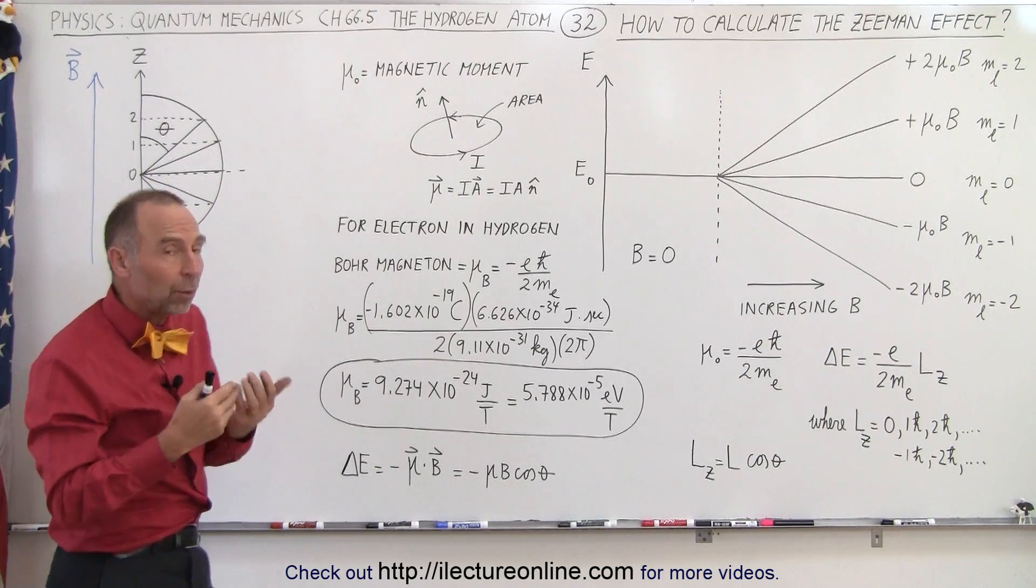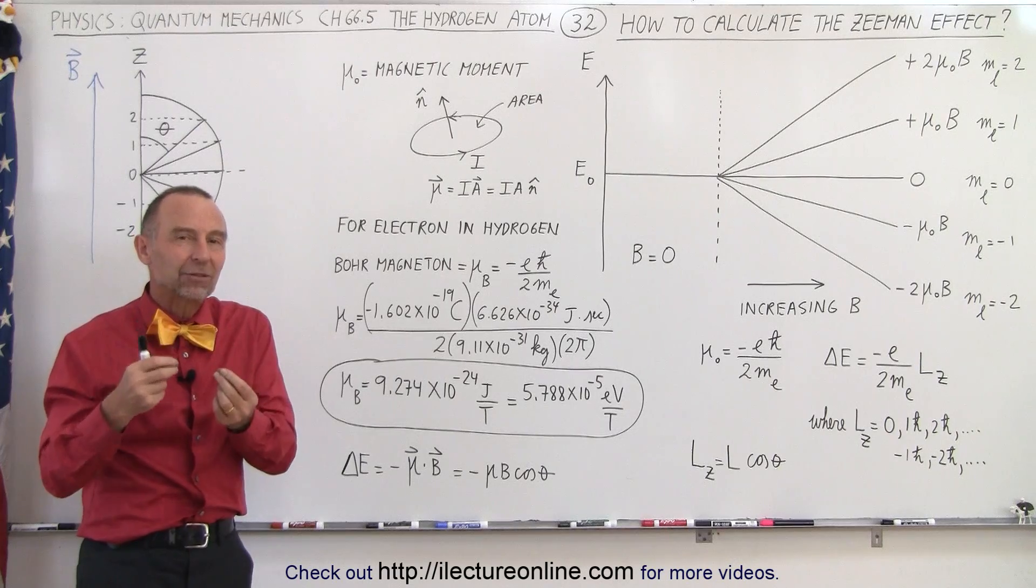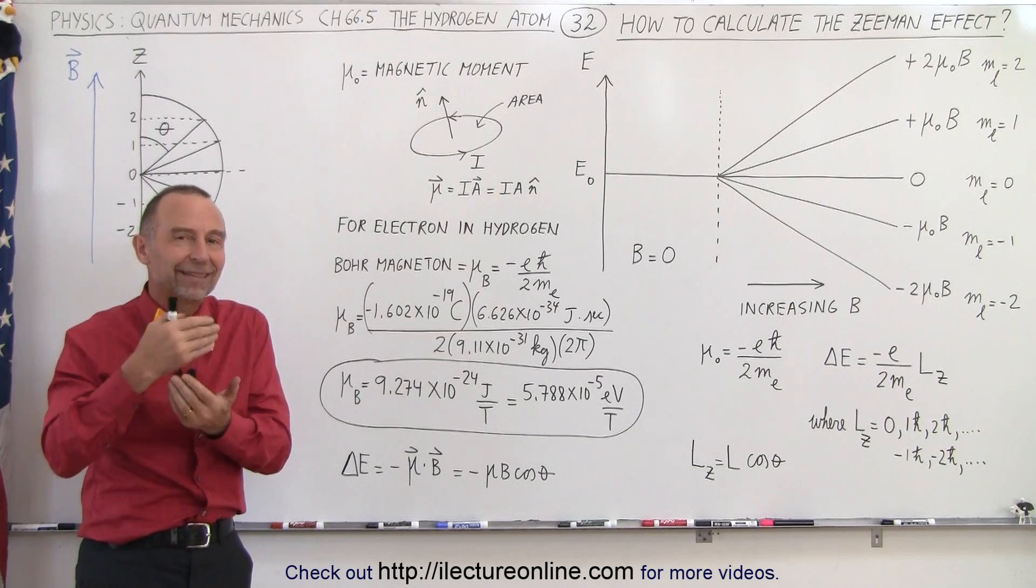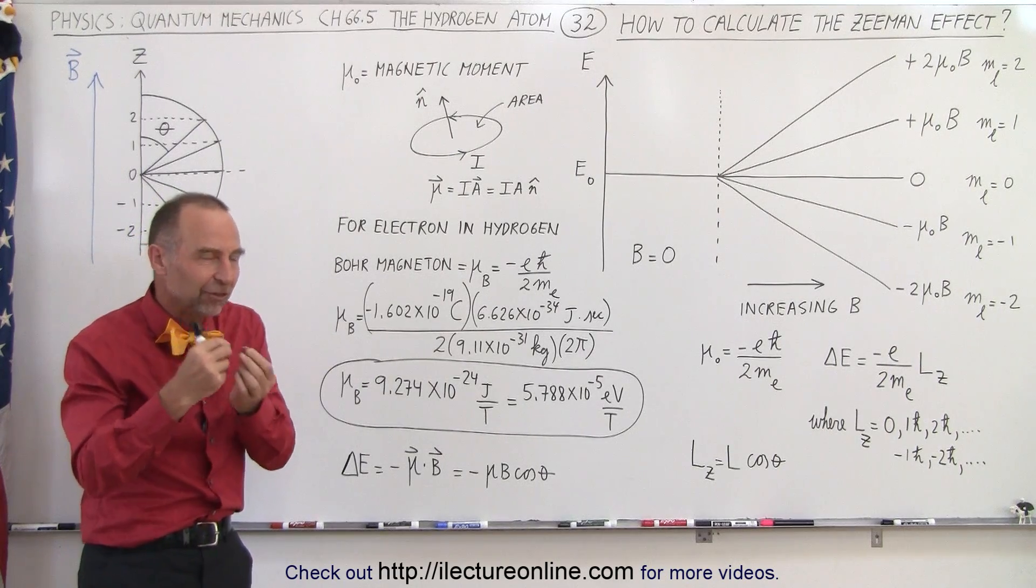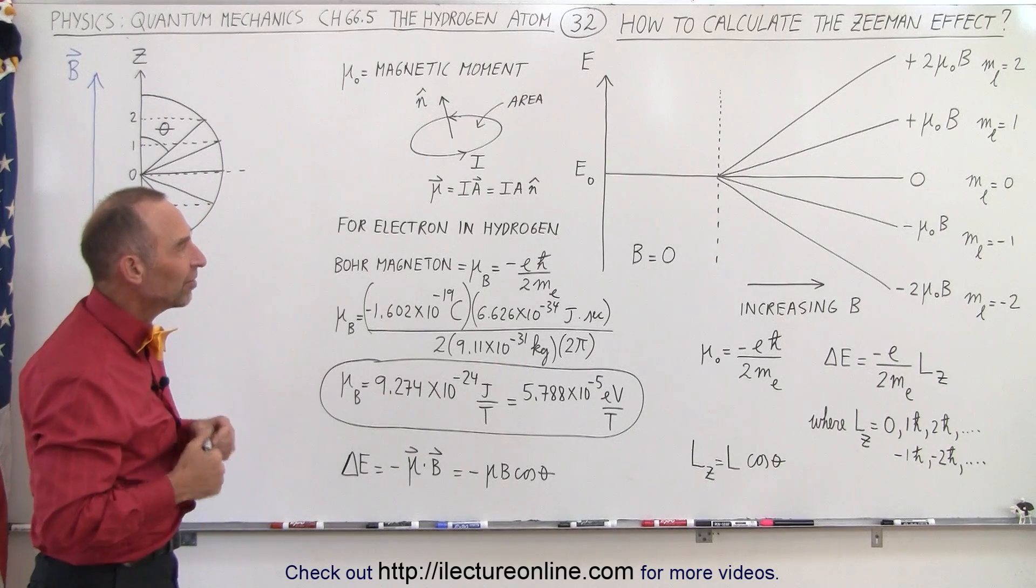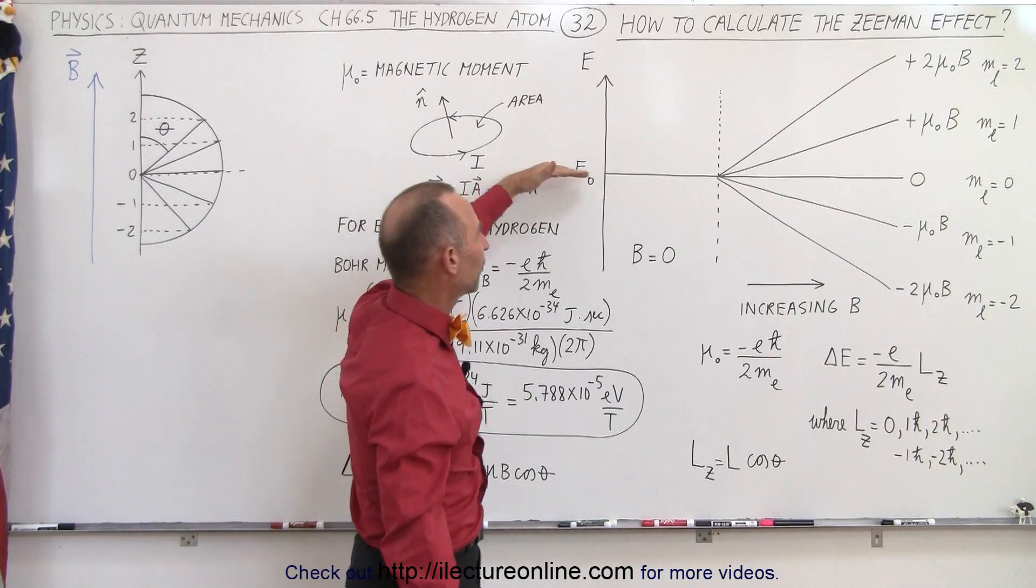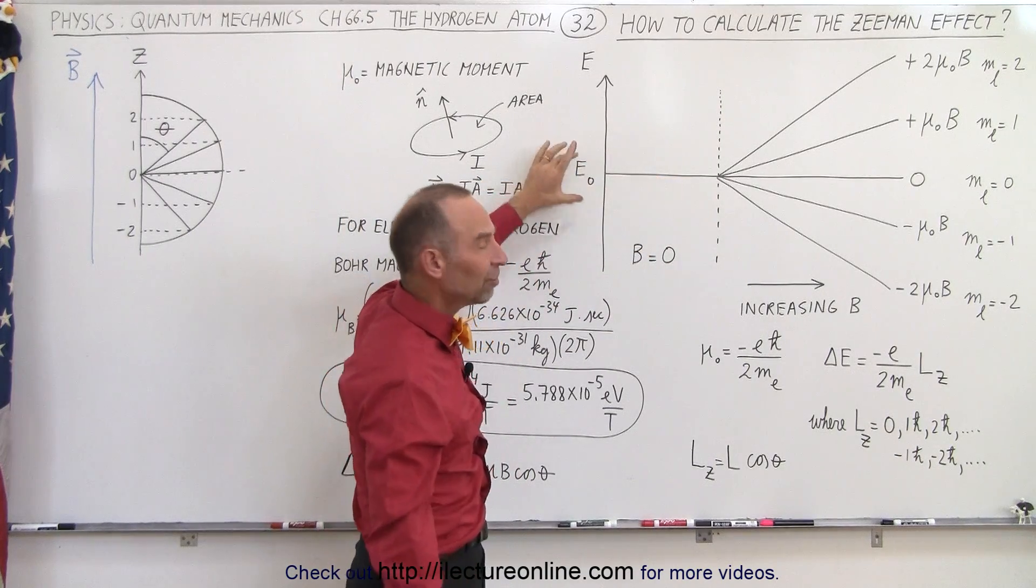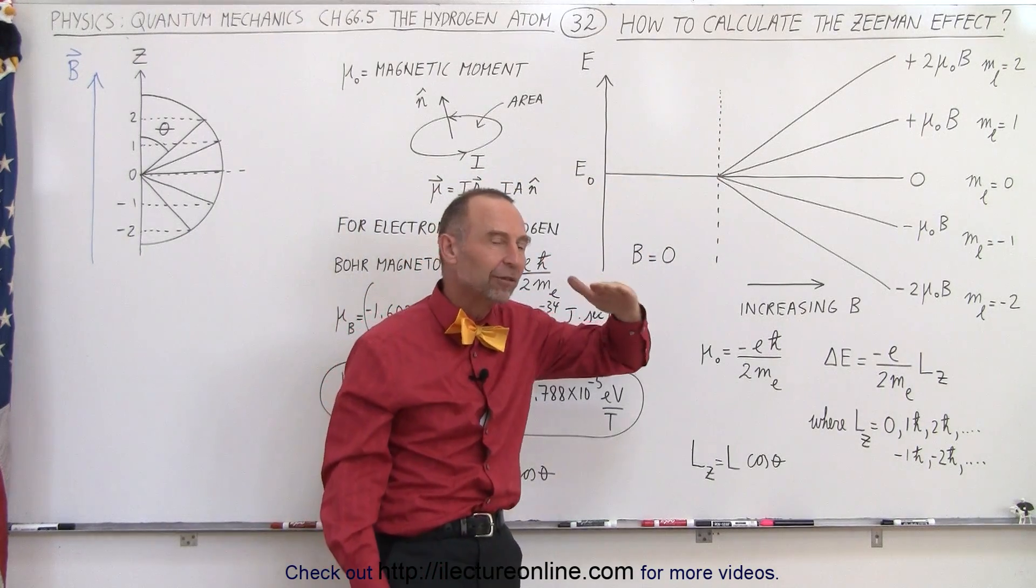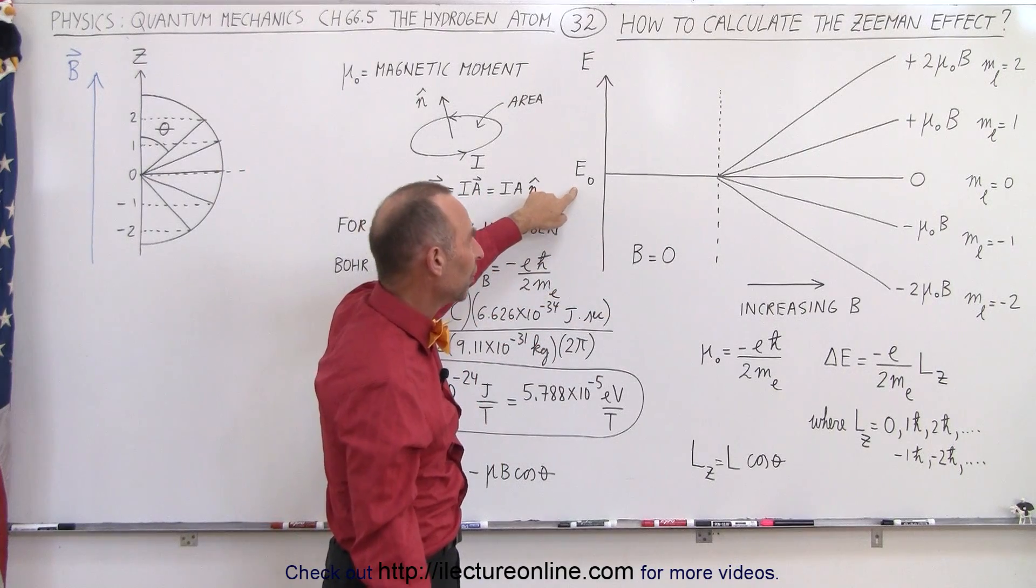Now what we're going to do is try to calculate the magnitude of that Zeeman effect. How much of a difference in the energy level is that? If there's no magnetic field applied, there's no difference in the energy level. Let's say that E sub naught is a particular energy level of a particular quantum number.